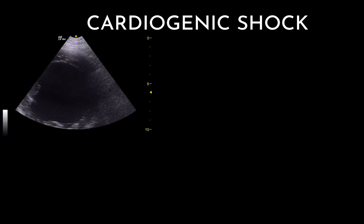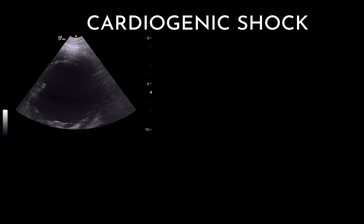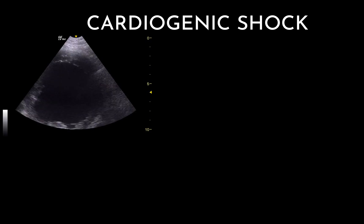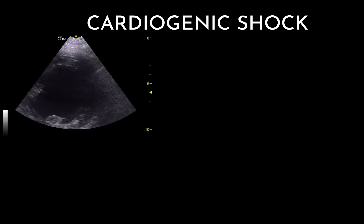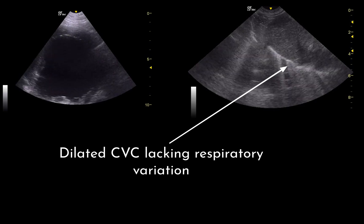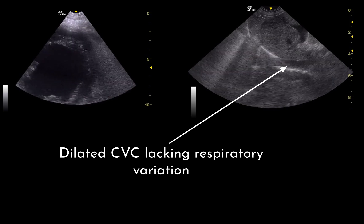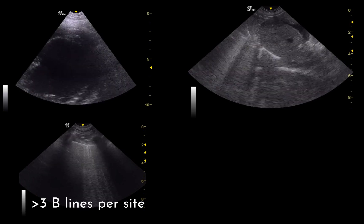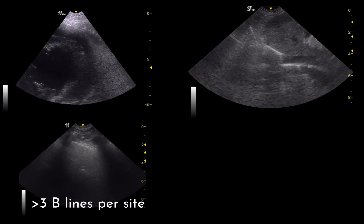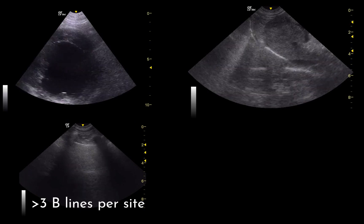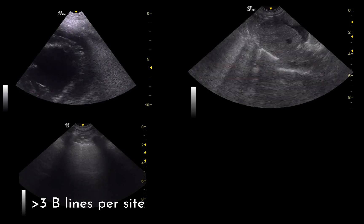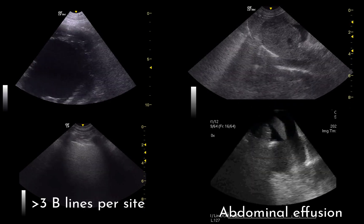Patients in cardiogenic shock usually have a hypodynamic, poorly contractile, dilated heart. Their CVC is dilated and lacks respiratory variation. They tend to have B-lines as a result of left-sided congestive heart failure, as well as pleural and abdominal effusion.